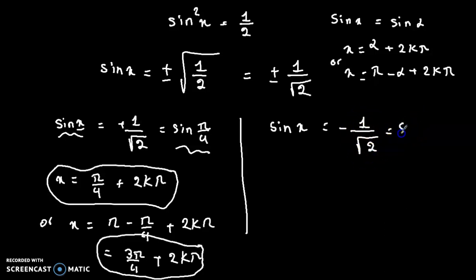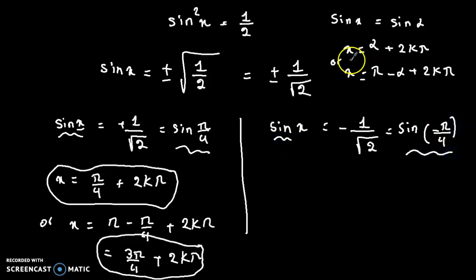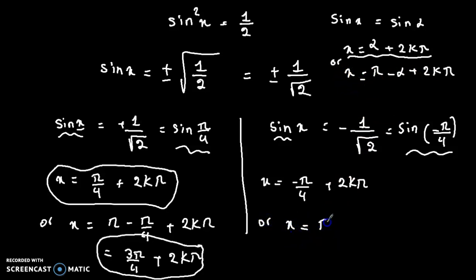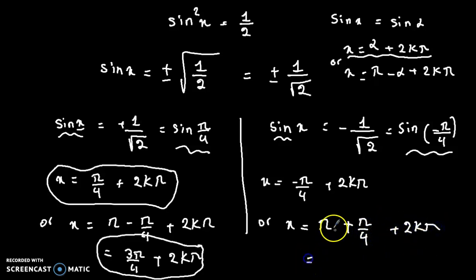Minus 1 over radical 2 equals sine of minus pi over 4. So sine x equals sine of minus pi over 4, giving x equals minus pi over 4 plus 2k pi, or x equals pi minus (minus pi over 4), which is pi plus pi over 4, equal to 5 pi over 4 plus 2k pi.